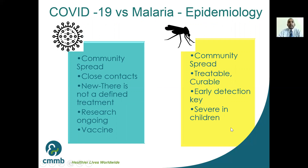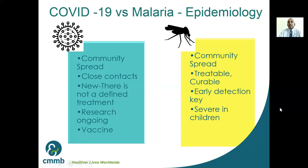COVID-19 spreads through community spread — it's already among us. When someone carrying the virus expresses droplets, anyone in close proximity is highly at risk of contracting it. There is no definitive treatment. Recent studies have shown that the antiviral remdesivir can shorten time to symptom improvement by a couple of days. Steroids have shown some improvement in mortality for those with worse lung disease, but studies are still ongoing. There is a race to find the right vaccine, and there is no vaccine at present.